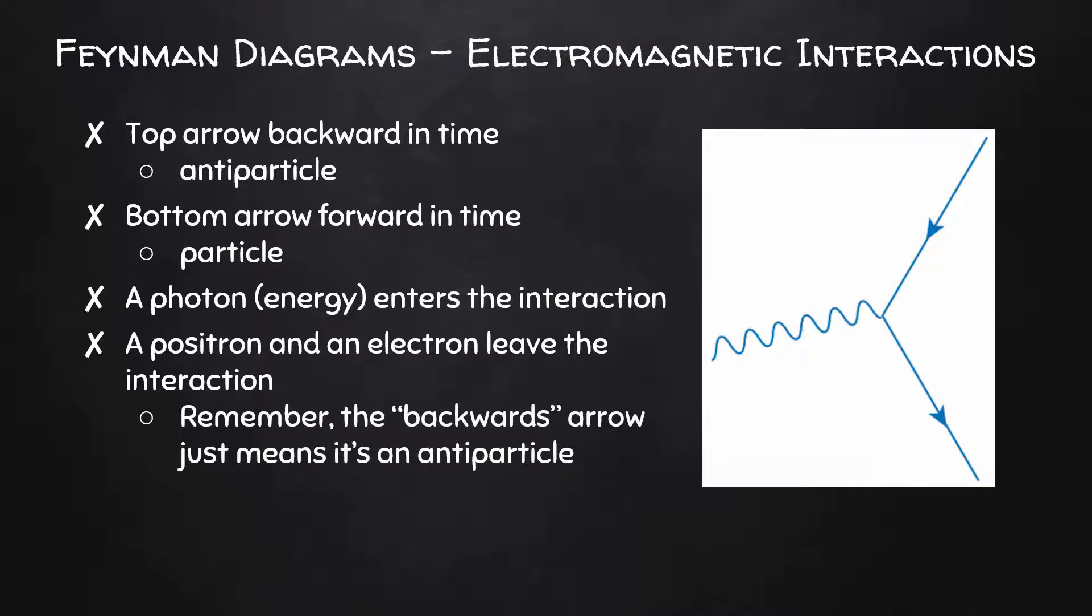Remember, the backwards arrow just means it's an antiparticle. We can interpret this interaction as representing pair production. That's when from some energy, in this case, the form of a photon, or represented by a photon, a particle and antiparticle pair are spontaneously produced.